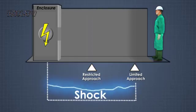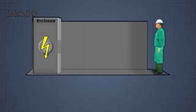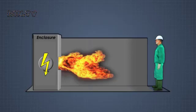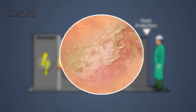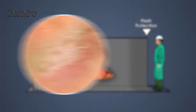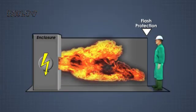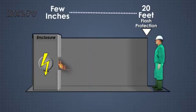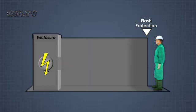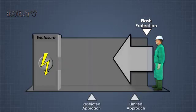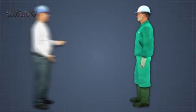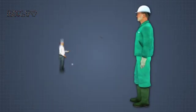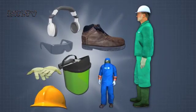In addition to the boundaries for electric shock hazards, there is also a boundary for arc flash hazards, known as the flash protection boundary. This boundary is determined by the distance where it is possible to receive second-degree burns if an arc flash were to occur. For high-voltage equipment, it can be as far as 20 feet away. For low-voltage equipment, this boundary can be as near as a few inches. To cross the flash protection boundary and any of the shock hazard boundaries, a worker must be authorized by the equipment owner and be wearing the proper PPE for the job they are doing.